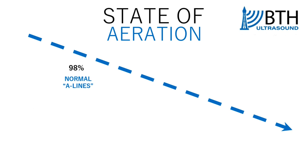The lung ultrasound score is basically a measure of the state of aeration of the lungs. The majority of the time the lungs have about 98% air. So if you have normal lung sliding and then you see A lines, that is a good indication that you have normally aerated lungs. If, however, you have an absence of lung sliding and confirmed pneumothorax, then for that section of the lung you in effect have close to 100% air.